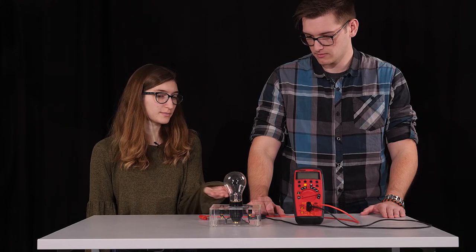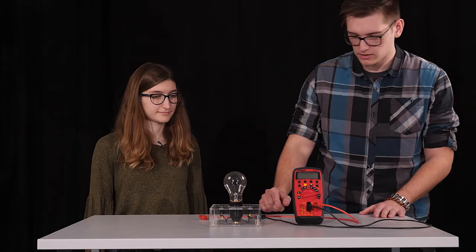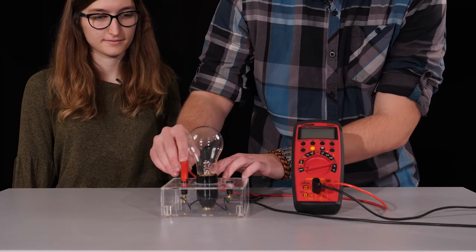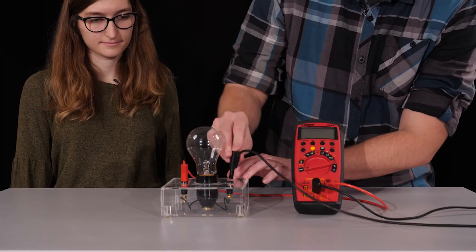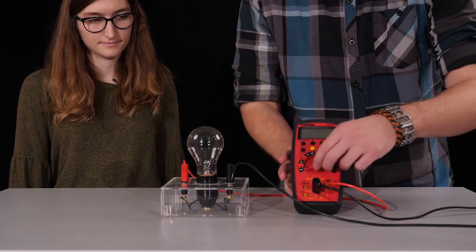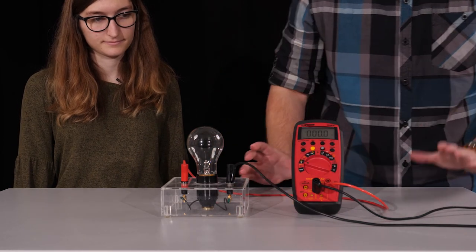Now I need to measure the resistance in my bulb. So for this one, you don't use a power source because the resistance is already in your bulb. So now I just need to hook up the multimeter to the bulb, and then I can turn on my multimeter to the resistance setting and get my reading.